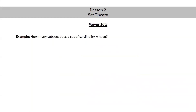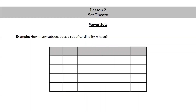How many subsets does a set of cardinality n have? To answer this question, let's make a table with columns for the cardinality of A. For each cardinality, we'll list the elements in a typical set A, followed by the elements of the power set of A, and from that we'll see what the cardinality of the power set is. Let's do this for sets of cardinality 0, 1, 2, and 3 to develop a pattern.